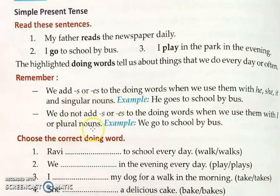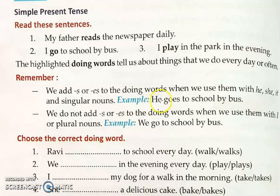Singular means when we are talking about one person or one thing. When we are talking about more than one, or a group, that becomes plural. When I am talking about myself, I say 'I go to school by bus.' But when talking about one other person, I say 'He goes to school by bus.' We add ES when the word ends with O — just like in the chapter on one and more than one.